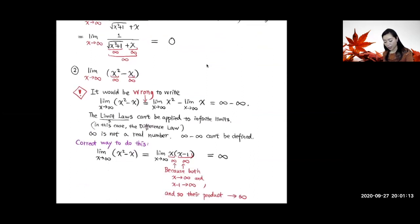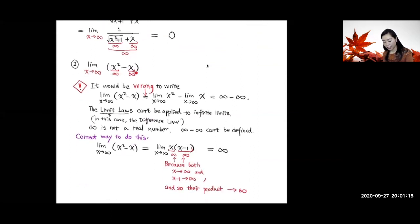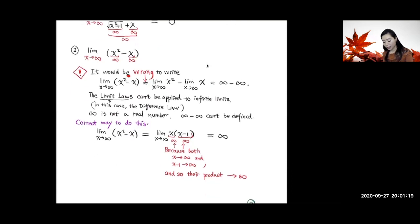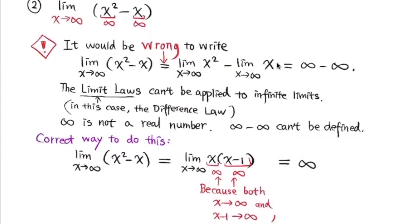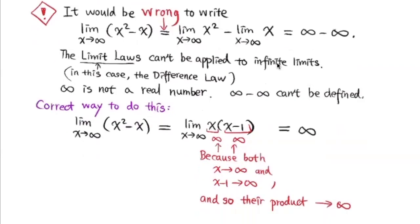Let's look at the next example. Again, this is going to be an infinity minus infinity type. You'd be wrong to write this as the limit of x² subtract the limit of x, because the limit law cannot be applied to infinite limits. When the limit does not exist, you cannot write the limit of the difference as the difference of the limits — because infinity is not a real number.